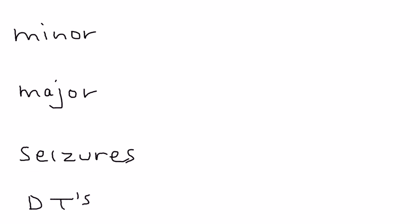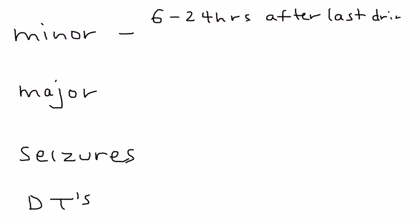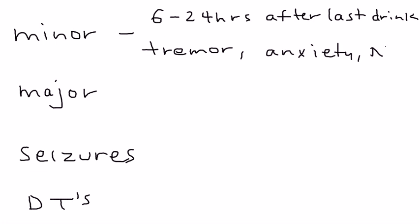Let's talk about these four levels of severity. If you have a patient in minor alcohol withdrawal, it's usually about six to 24 hours after the last drink. The type of symptoms include a tremor, anxiety, probably some nausea and vomiting, sleep disturbance, and insomnia.